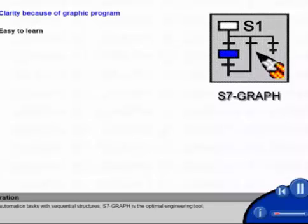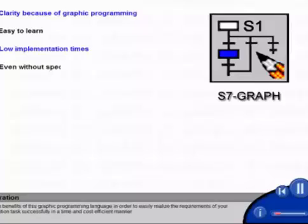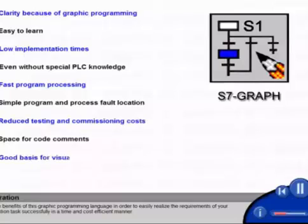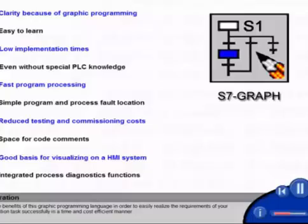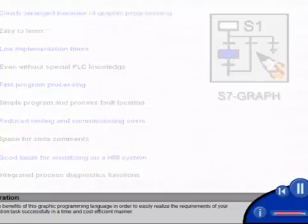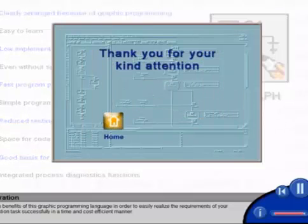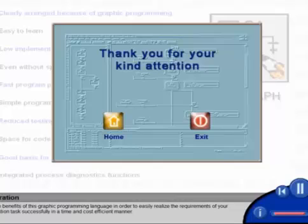For all automation tasks with sequential structures, S7 graph is the optimal engineering tool. Use the benefits of this graphic programming language in order to easily realize the requirements of your automation tasks successfully, in a time and cost efficient manner.